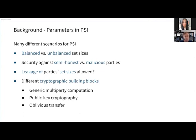There are many different scenarios for private set intersection and very specific protocols tailored to those scenarios. For example, we can think about whether the sizes of these sets are equal or whether one set is much smaller than the other. Do we need security against semi-honest parties or malicious parties? Can we leak the set sizes, or is that also critical information?